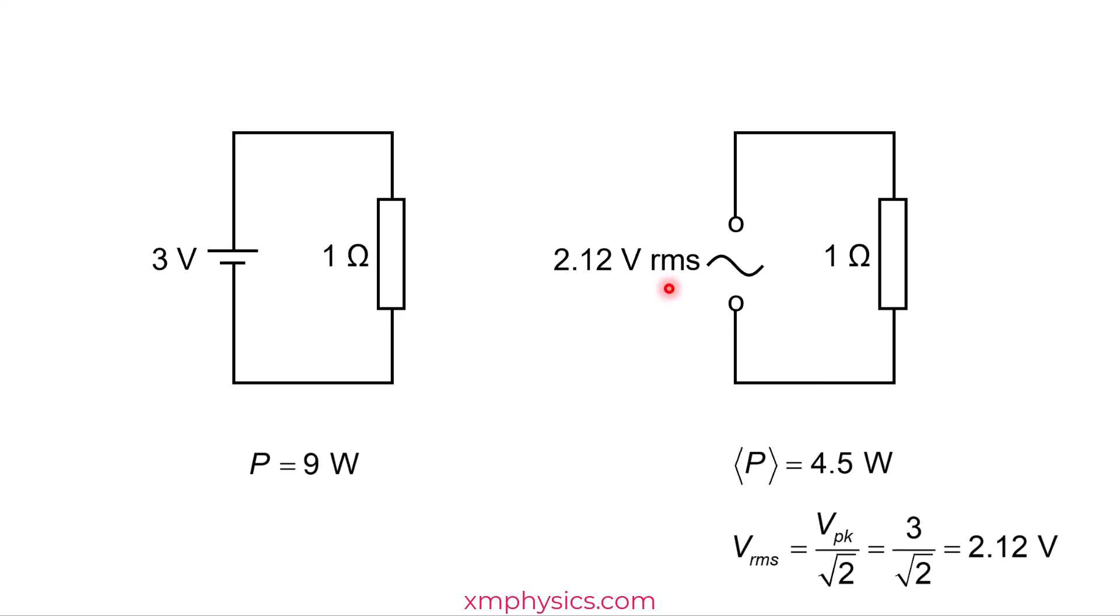Because we can then compare it to a 2.12 volts DC power supply which provides the exact same average power. And now you should understand why some people say that the RMS voltage is the equivalent DC voltage that provides the same power dissipation.